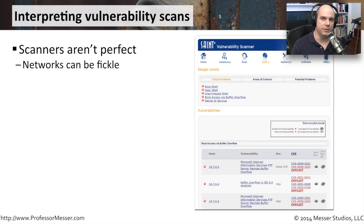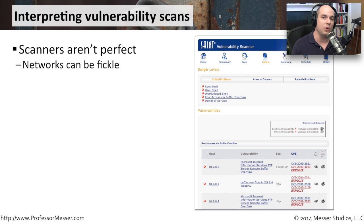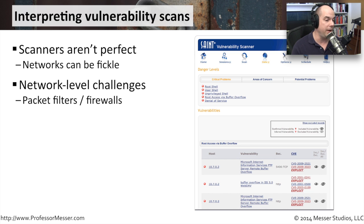One thing to watch out for with vulnerability scanners is that they aren't perfect. They don't really have context as to the types of systems you have — they start with a pretty blank slate and build as much information as possible. They can be a little bit fickle and can't always hone in on specific problems. So you do have to go back over the results and make sure the vulnerability scanner is giving you correct information. For instance, if you have network-level devices, packet filters, or firewalls in place, you may not have the ability to go from one side of your network to the other.